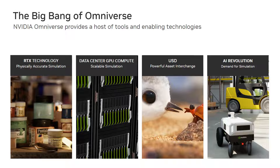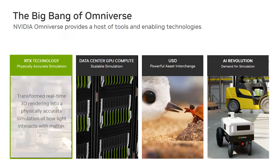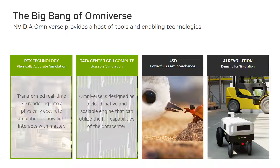Omniverse wasn't possible until recently, when a confluence of four enabling technologies led to the creation of this revolutionary product. With the introduction of NVIDIA RTX, we transformed real-time 3D rendering from a system that produces images. With recent advancements in data center GPU computing, we can leverage supercomputers in the cloud running simulations that are too large and compute-intensive for traditional computers. Omniverse is designed as a cloud-native and scalable engine that can utilize the full capabilities of the data center.